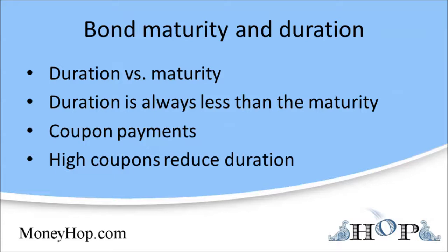Because the first bond makes intervening coupon payments, it has a duration of about six and a half years. The zero-coupon bond has a duration of 10 years. Because of its longer duration, the zero-coupon bond is almost twice as sensitive to changes in interest rates as the first bond, although they both have the same maturity date.